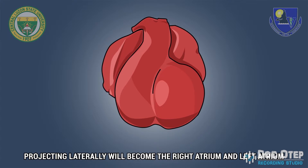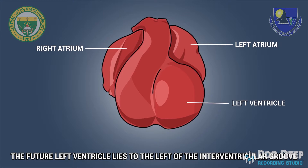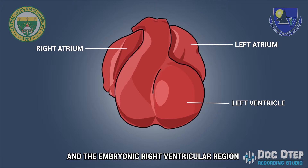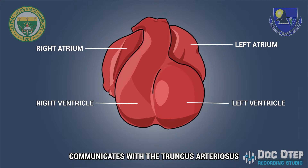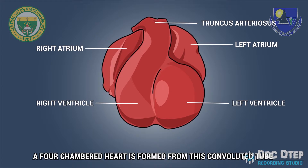Projecting laterally will become the right atrium and left atrium. The future left ventricle lies to the left of the interventricular groove, and the embryonic right ventricular region communicates with the truncus arteriosus.